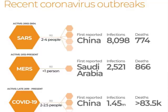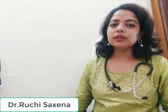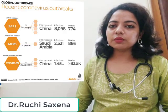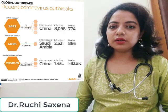SARS had an outbreak from 2002 to 2004. It originated from Foshan, China in the year 2002, and caused Severe Acute Respiratory Syndrome.